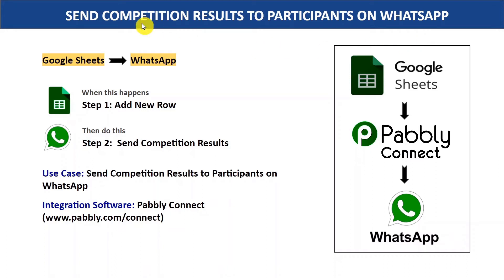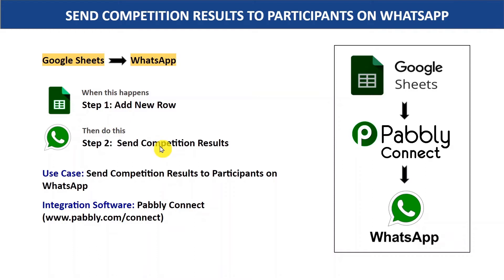Hey everyone, in this video we are going to learn how you can send competition results to participants on WhatsApp from Google Sheets automatically. As we know there is no direct connection between Google Sheets and WhatsApp, we are going to integrate both of them with the help of an integration software, Pably Connect. This process requires no coding knowledge and any non-technical person can also do this easily.